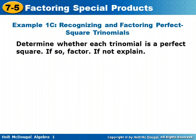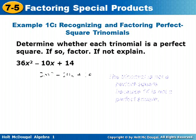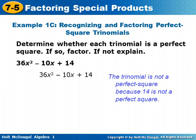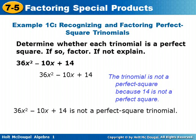Determine whether each trinomial is a perfect square. If so, factor. If not, explain. For 36x squared minus 10x plus 14, the trinomial is not a perfect square trinomial because 14 is not a perfect square. So 36x squared minus 10x plus 14 is not a perfect square trinomial.